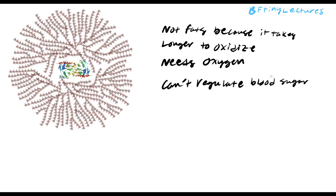That's the main reason we don't use fats as quick energy storage. We also don't use starches because they don't have as much glucose. You can use glycolysis without using much energy, make energy without oxygen, and regulate blood sugar using glycogen — you can't get that from fats. Fats are more of a long-term energy storage because they require more energy to oxidize.